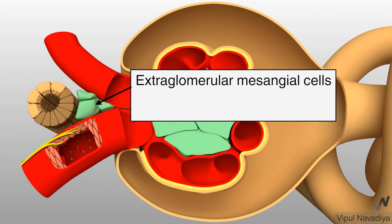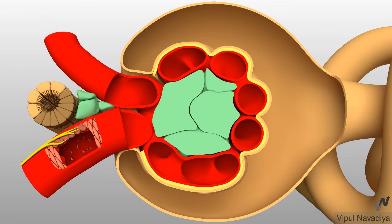Now, extraglomerular mesangial cells. They are also called lacis cells or agranular cells. Their function is not clearly understood yet. So this was the juxtaglomerular apparatus.